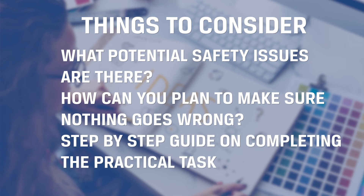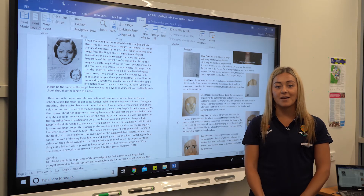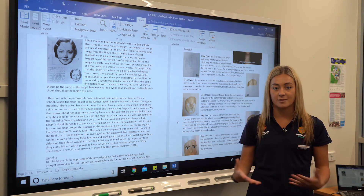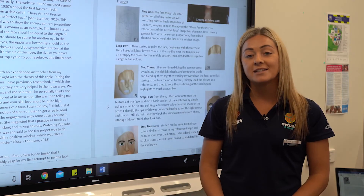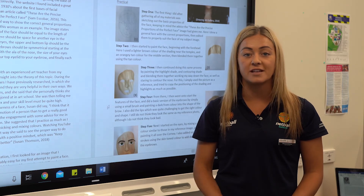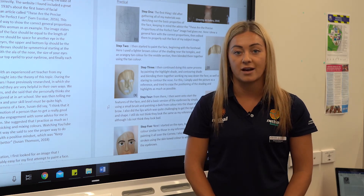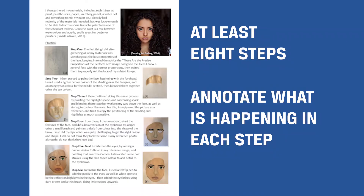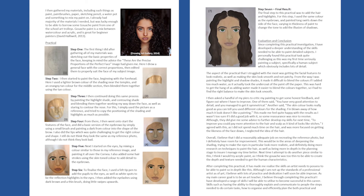Finally, you will need to think of a step-by-step guide on how you plan on completing the practical task. Step four is conducting the practical task. During this step, you're required to actually complete the practical task, whether that's making something or performing something. You will need to take photos of each step during the process, or get someone to take video footage of you completing the task. It is recommended you have at least eight steps, which you will need to annotate about what was happening in each step. This is a very detailed example of all the steps that one student has done in their practical task.